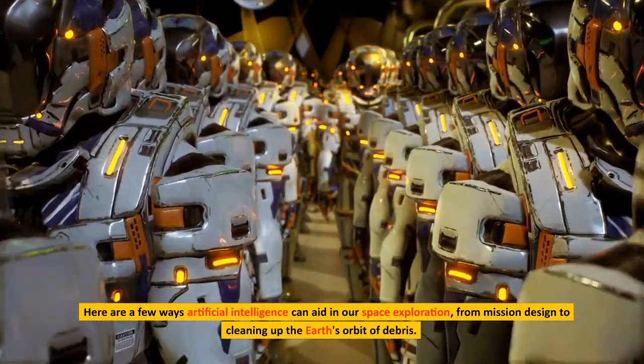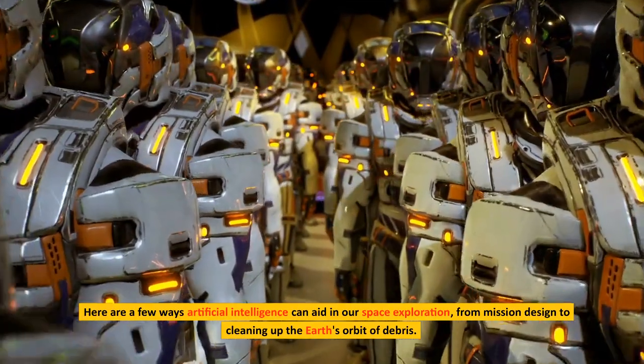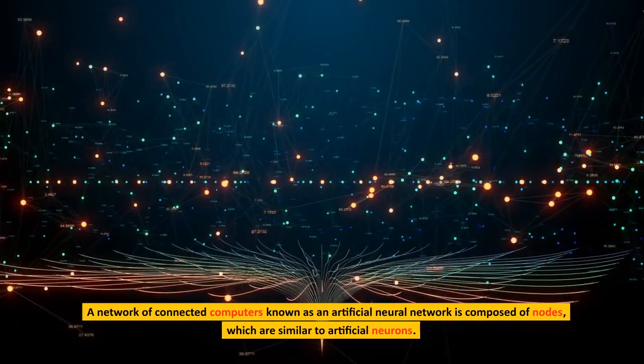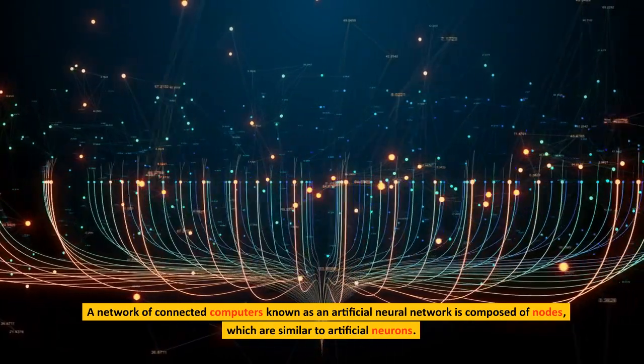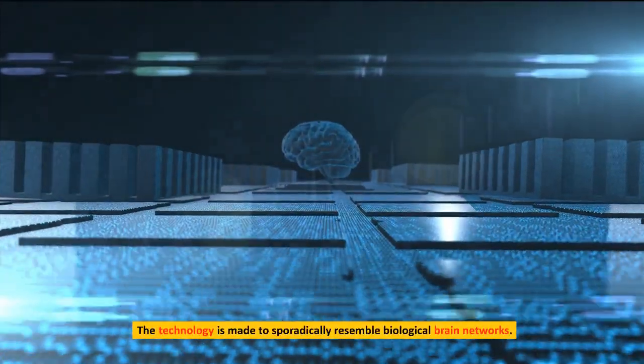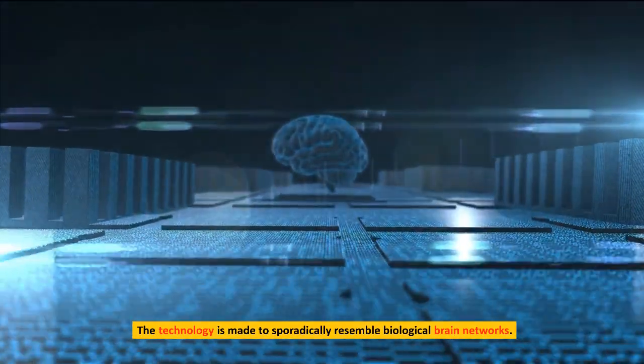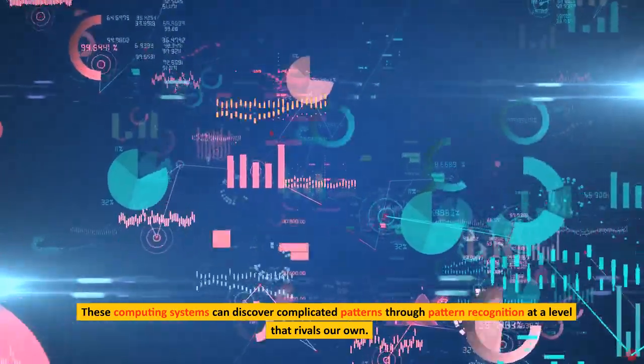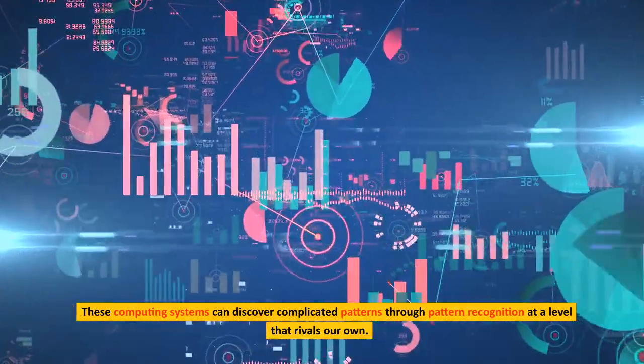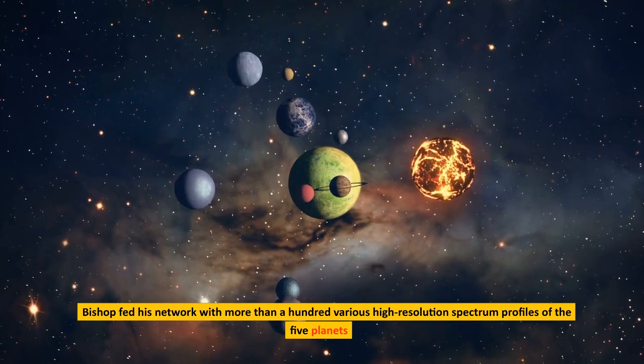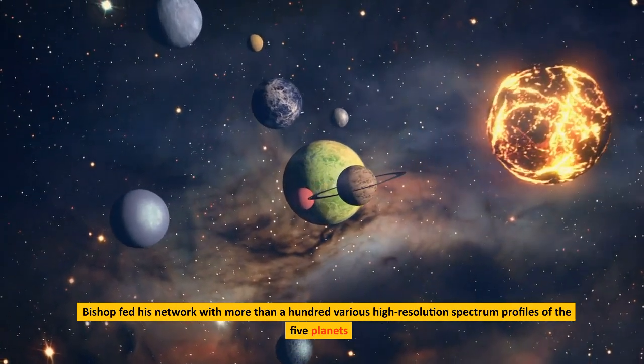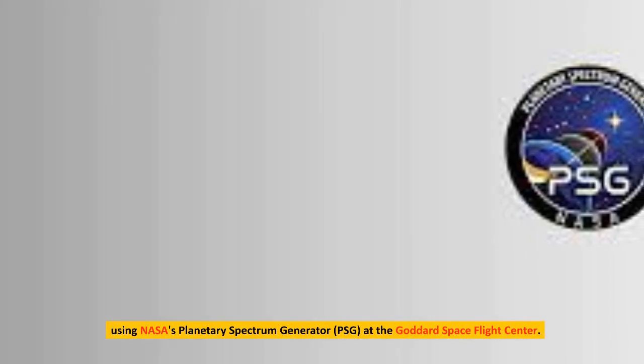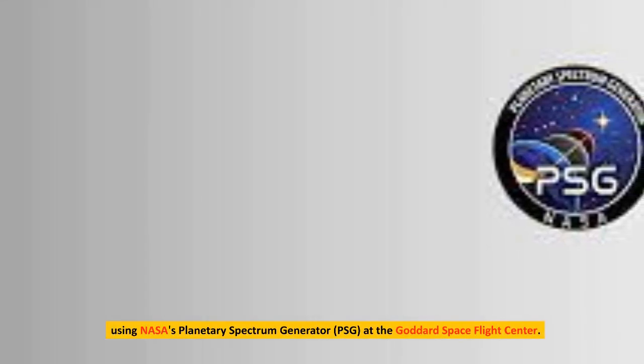From mission design to cleaning up the Earth's orbit of debris, a network of connected computers known as an artificial neural network is composed of nodes, which are similar to artificial neurons. The technology is made to resemble biological brain networks. These computing systems can discover complicated patterns through pattern recognition at a level that rivals our own. Bishop fit his network with more than 100 various high-resolution spectrum profiles of the five planets using NASA's Planetary Spectrum Generator, PSG, at the Goddard Space Flight Center.